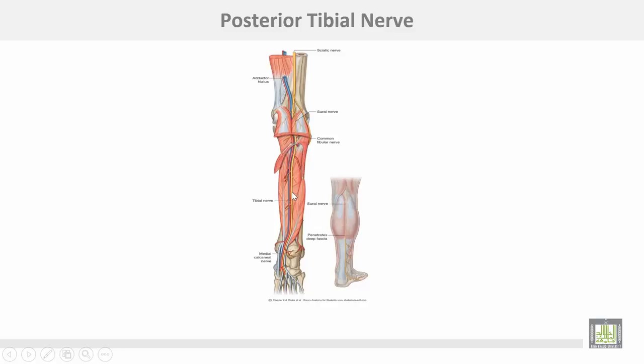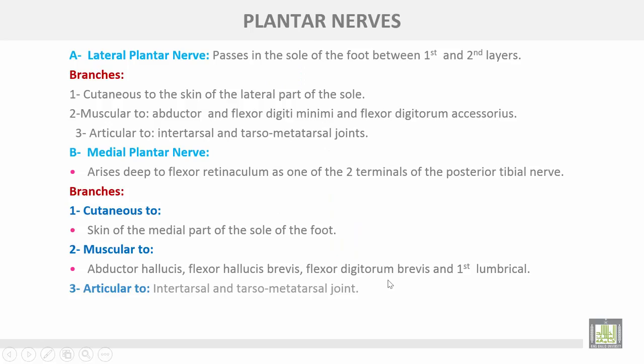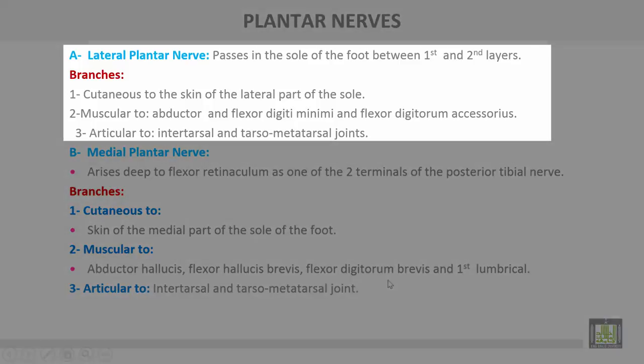This is the posterior tibial nerve, dividing deep to the flexor retinaculum into two terminals — medial and lateral plantar nerves. The lateral plantar nerve passes in the sole of the foot between the first and second layers. Branches of the lateral plantar nerve include: cutaneous branches to the skin of the lateral part of the sole of the foot; muscular branches to abductor digiti minimi, flexor digiti minimi, and flexor digitorum accessorius.